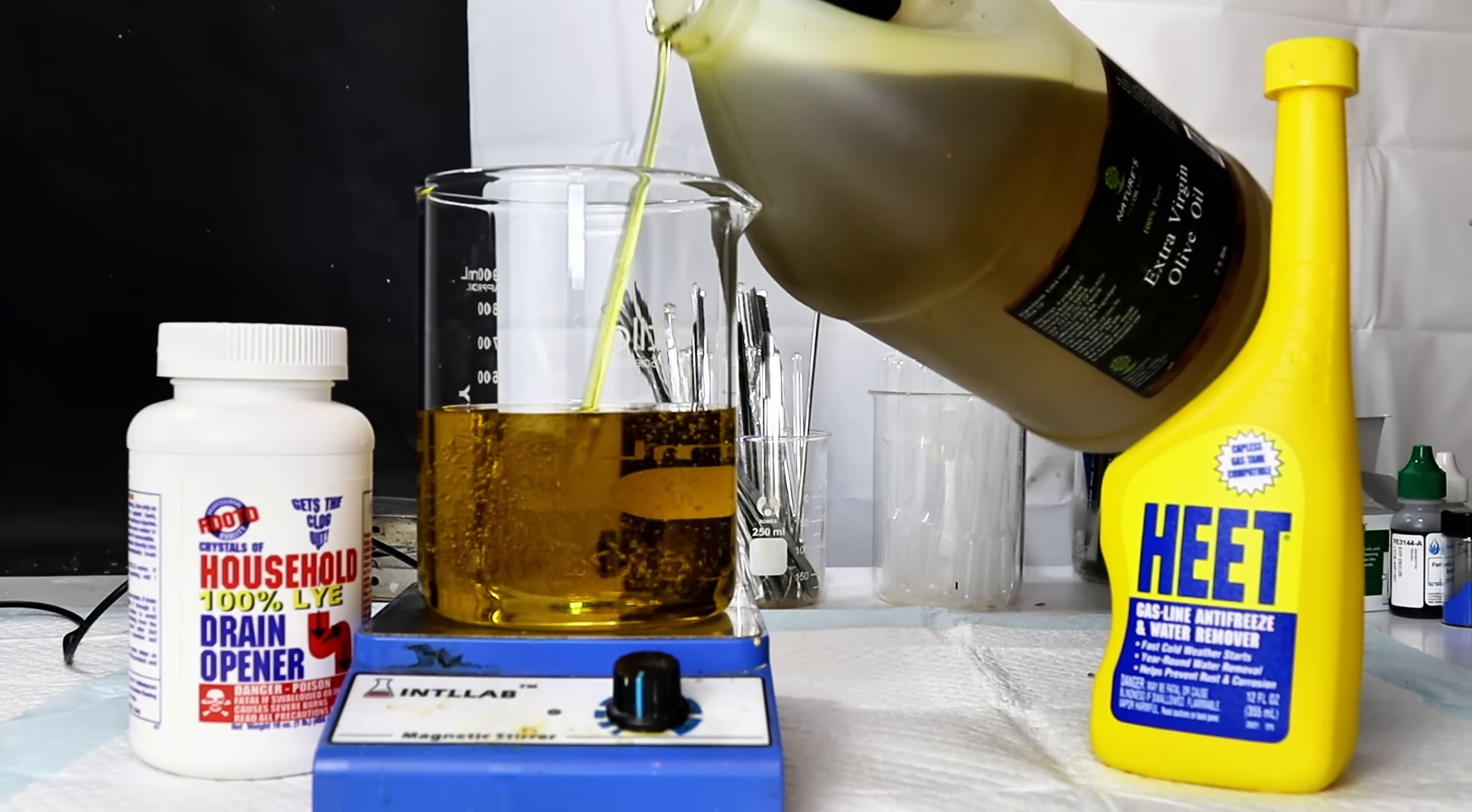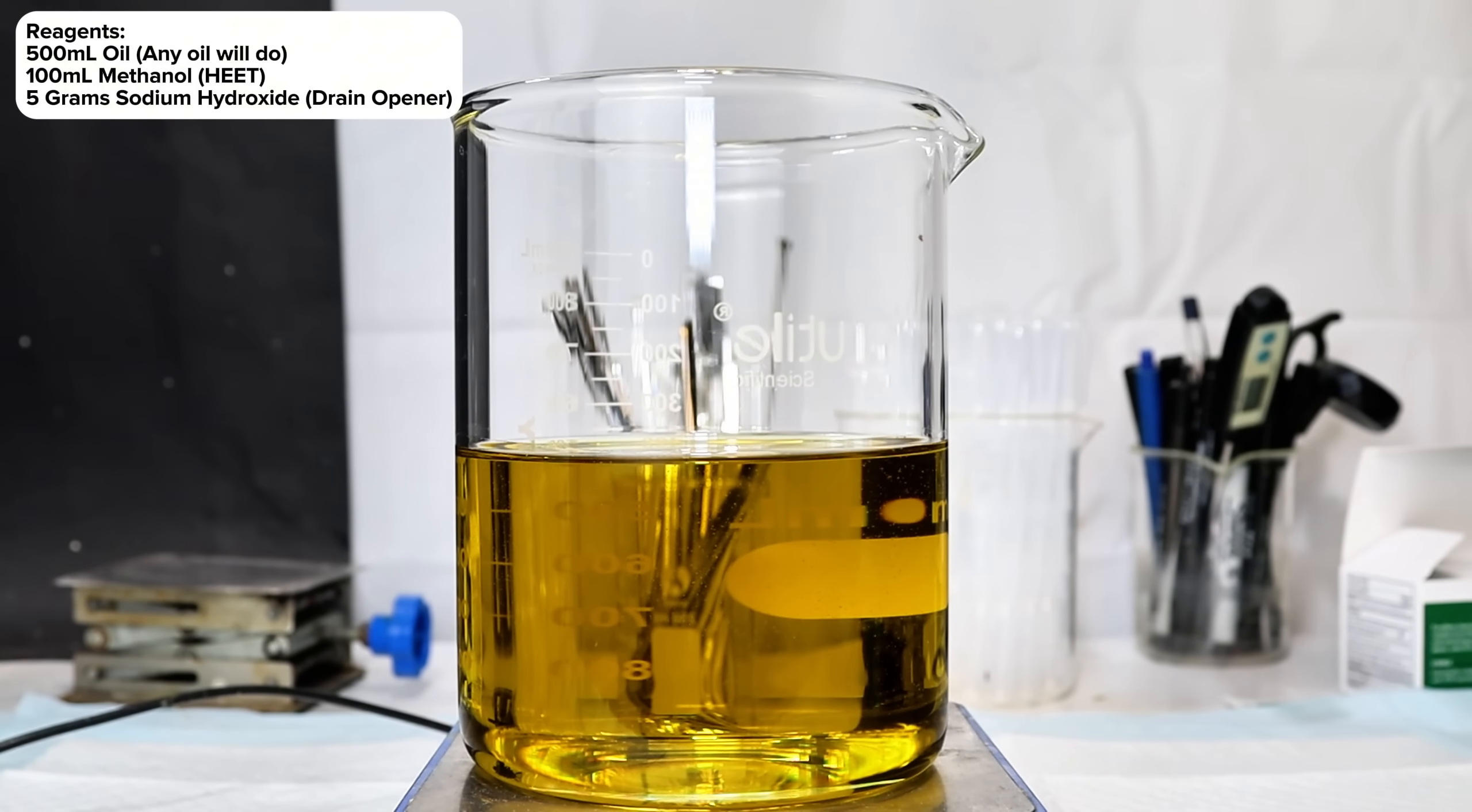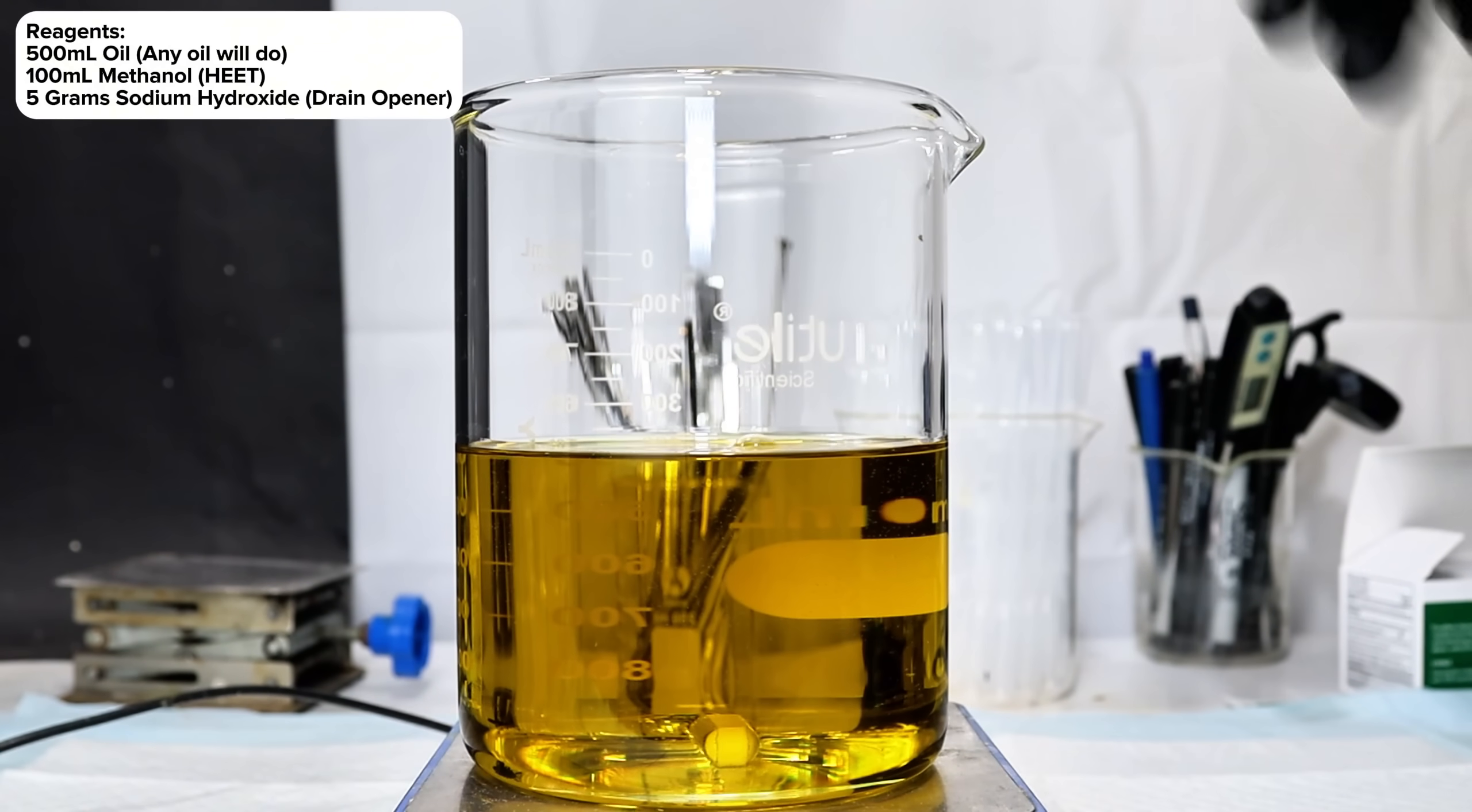Now to get started, I simply pour about 500 milliliters of olive oil into a 1-liter beaker. Any oil will work here, but I accidentally bought gallons of olive oil during my soap-making phase that I'd really like to get rid of.